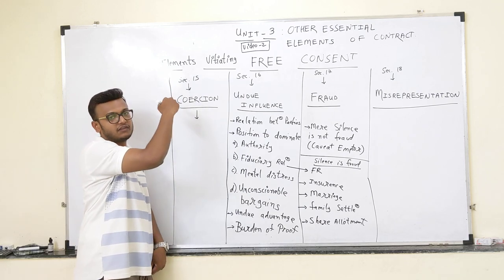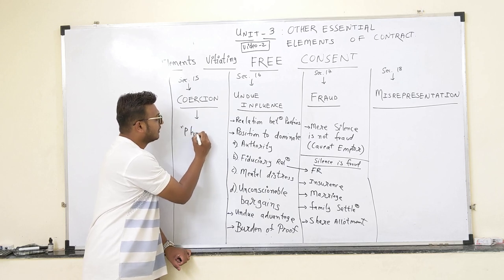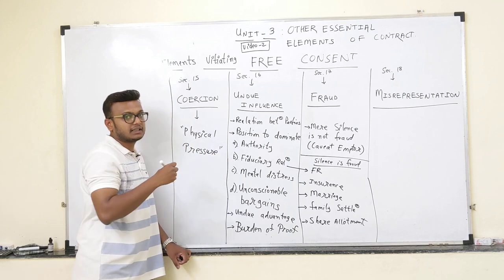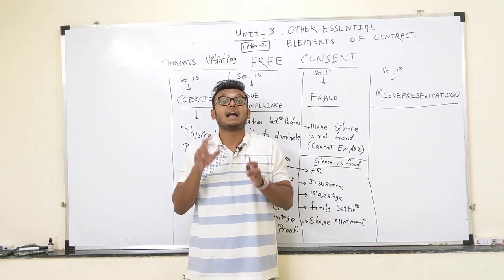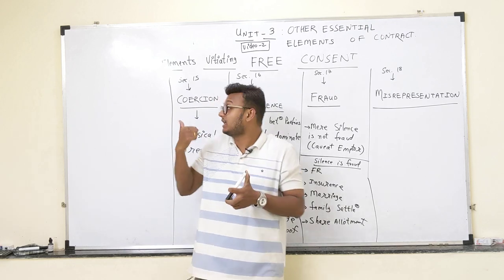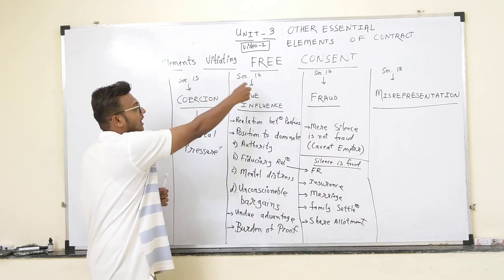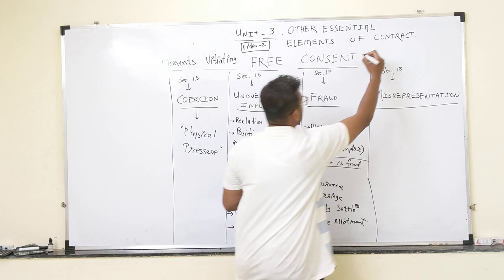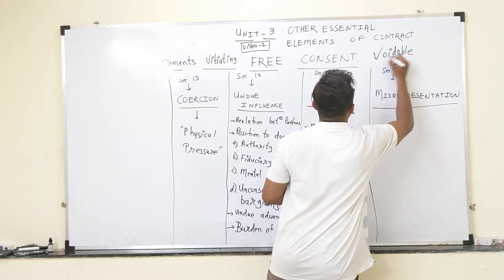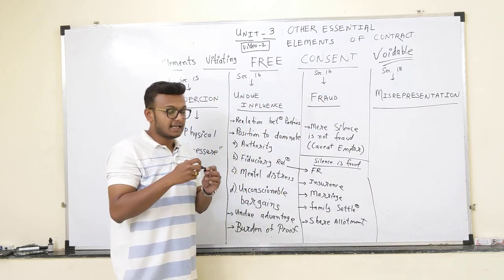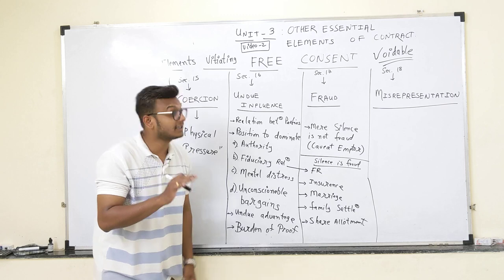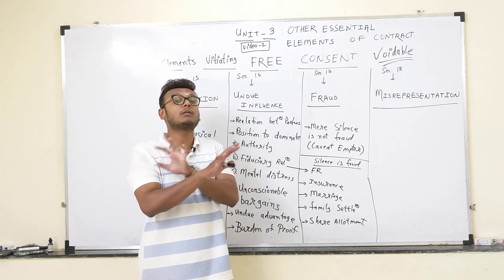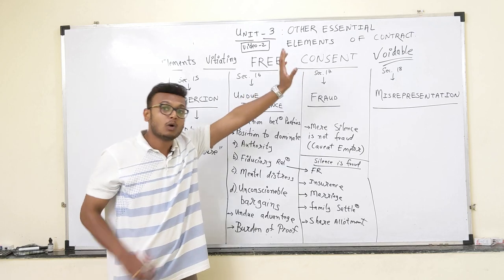Starting with section 15 — coercion. Coercion is nothing but physical pressure. If any person is trying to physically harass someone in the contract, that will lead to coercion. Remember: coercion, undue influence, fraud, or misrepresentation will make the contract voidable. I have not covered mistake here — that is section number 20 — because if mistake is there, it becomes a void contract, not voidable.